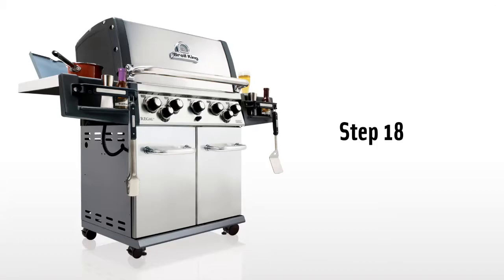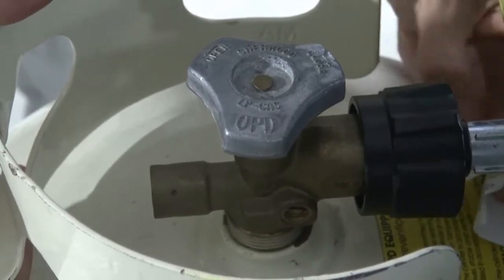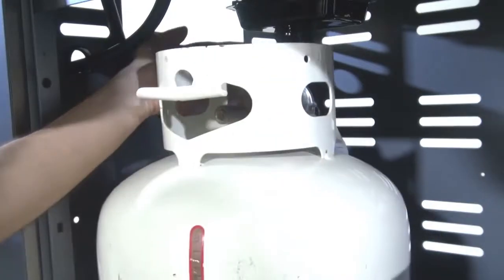Step 18. For propane models, install the tank onto the tank slide and attach the regulator to the propane tank. Check the location of the tank retainer bracket to ensure the collar on your propane tank is secured by the bracket.